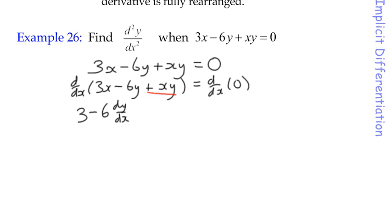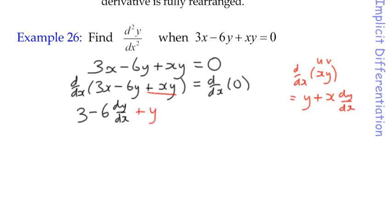The third expression is a bit more involved. I've got the product rule to think about. The product rule says the first term is u and the second term is v, so the derivative is u dash — the derivative of x, which is 1, multiplied by v, which is y — plus u, which is x, times v dash, the derivative of y, which is dy by dx. So the product rule gives plus y plus x dy by dx. On the right-hand side, the derivative of 0 is 0.